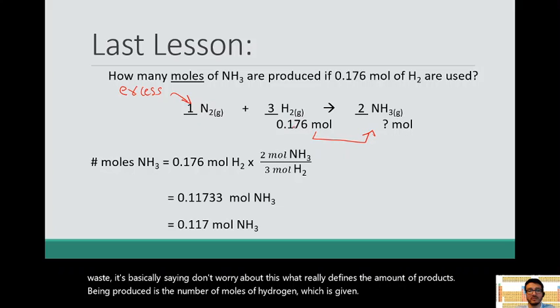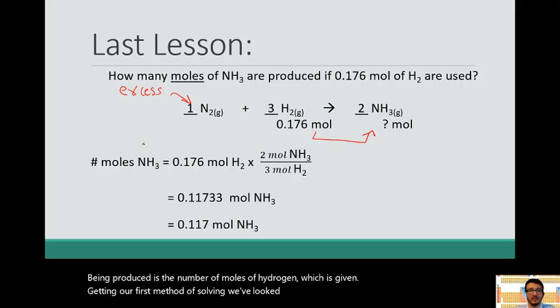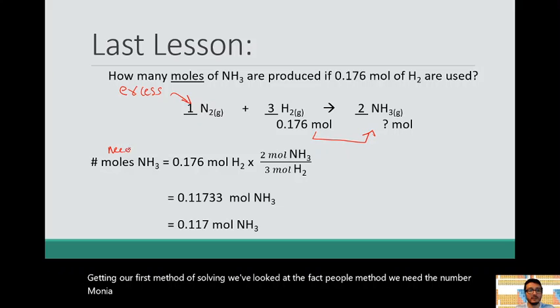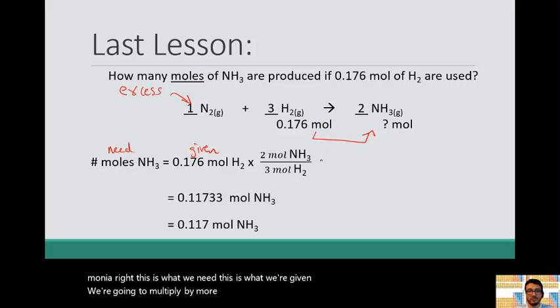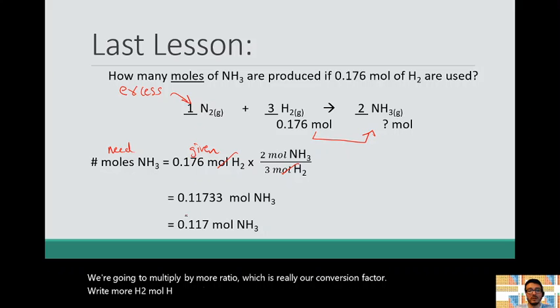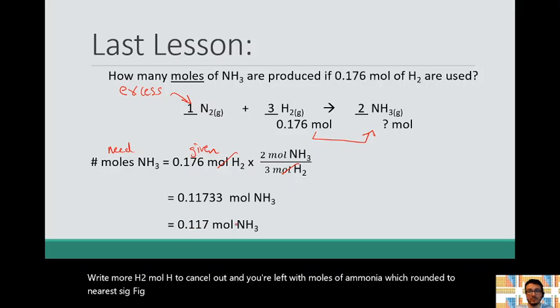Okay, in our first method of solving, we've looked at the Factor-Label method. We need the number of moles of ammonia, right? This is what we need. This is what we're given. And we're going to multiply by mole ratio, which is really our conversion factor. Mole H2, mole H2 cancel out and you're left with moles of ammonia, which rounded to the nearest sig fig is 0.117 moles. And you're done.